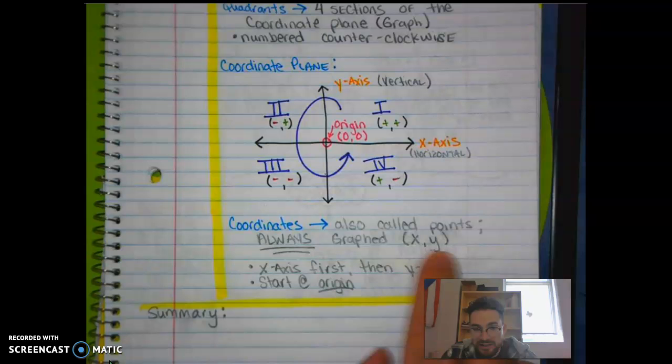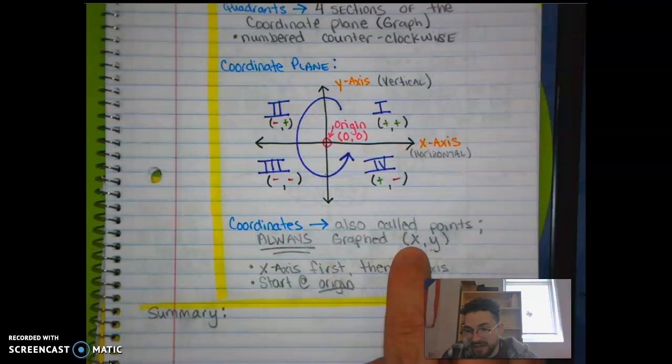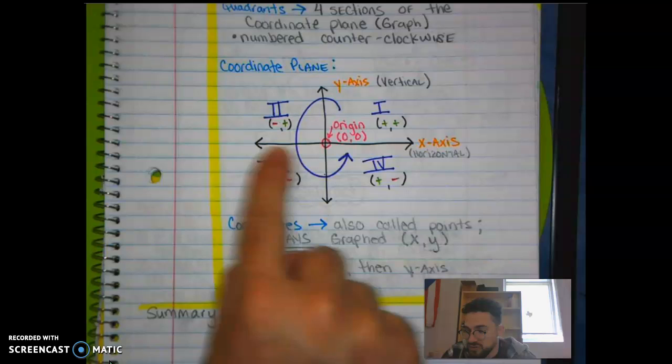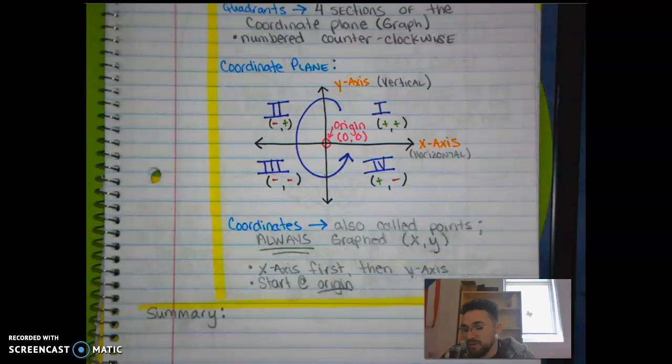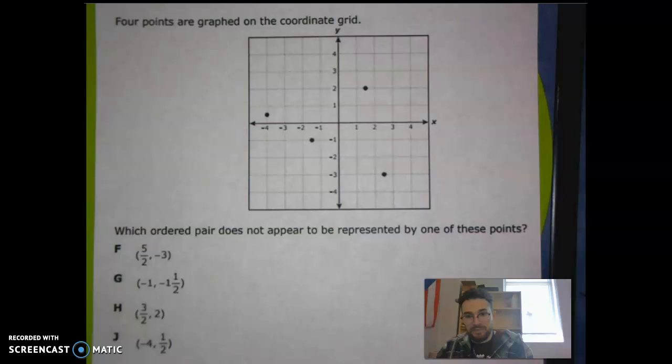So coordinates are always graphed in the same form as x and then y. Remember your x first. Always remember it in alphabetical order: x, y, z. So your x always goes first, which means you should be starting at the origin and moving either to the right or to the left first, depending on whether that first coordinate is either positive or negative. From there, then you will move up and down on your y-axis, and that is how you will graph a point on the coordinate plane.